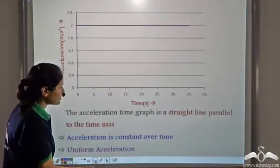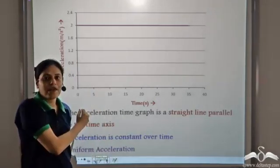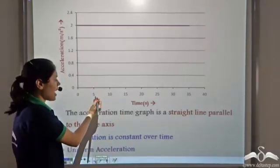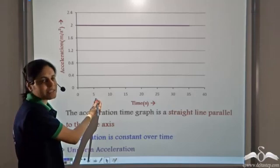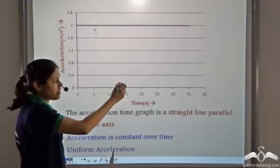We see that this is a straight line parallel to the time axis. At time equal to 5 seconds, acceleration is 2 m per second square.